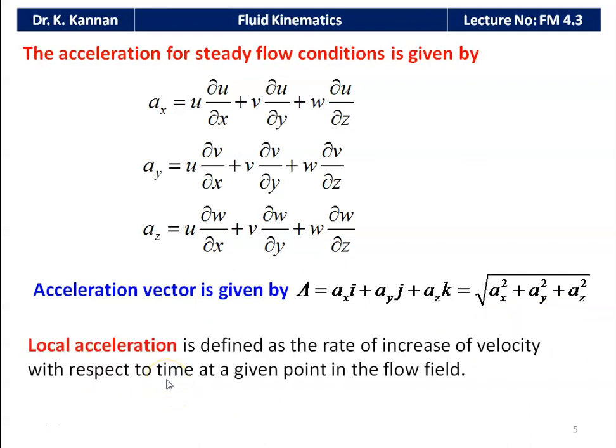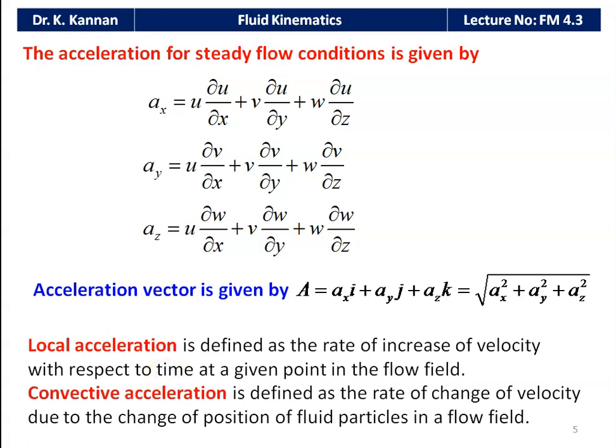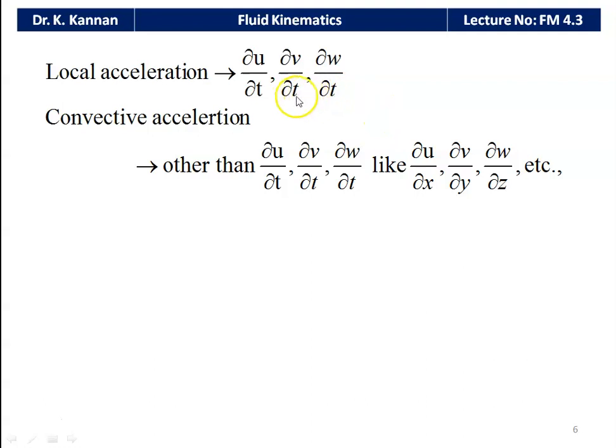There are two types of acceleration: local acceleration and convective acceleration. Local acceleration is defined as the rate of increase of velocity with respect to time at a given point in the flow field. Convective acceleration is the rate of change of velocity due to the change in position of the fluid particle in the flow field. The terms ∂u/∂t, ∂v/∂t, and ∂w/∂t are the local acceleration, while the remaining position-based terms (∂u/∂x, ∂v/∂y, ∂w/∂z, etc.) are the convective acceleration.